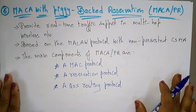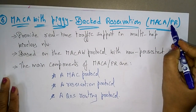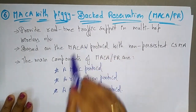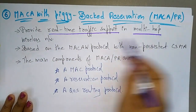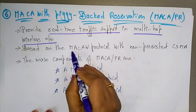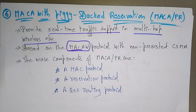MACA with Piggy-bank Reservation — P means piggy bank, R is the reservation. It provides real-time traffic support in multi-hop wireless networks. The main use of this protocol is providing real-time traffic support in multi-hop wireless networks. It is based on MACAW, which is a contention-based protocol without reservation with non-persistent CSMA.